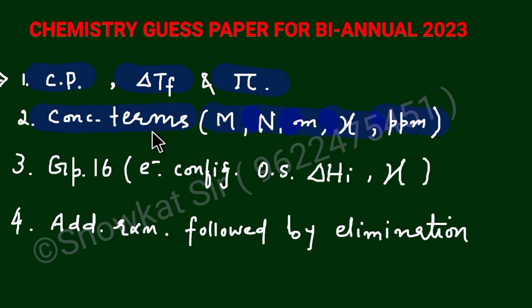Then next you will study in Group 16 elements their electronic configuration, the oxidation state, the ionization enthalpy, the electronegativity, their trend. Next you will also study here that in these Group 16 elements the anomalous behavior of the first element that is the oxygen that you can also then study for Group 15 elements too.